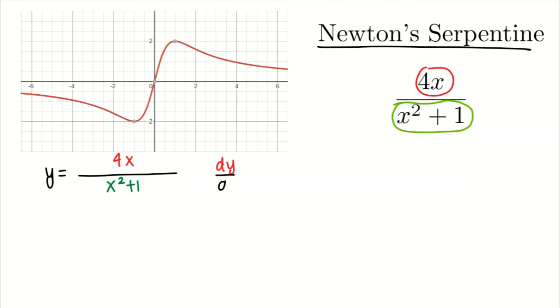Now, dy/dx, the derivative, is equal to - well, first you write the denominator squared. That's the first rule. So x squared plus 1, squared.